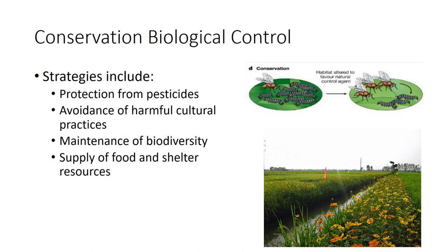Similarly, the effectiveness of entomopathogenic organisms of insect pests can sometimes be improved by altering environmental conditions at the time of application, such as spraying a crop with water to elevate humidity during release of fungal pathogens.